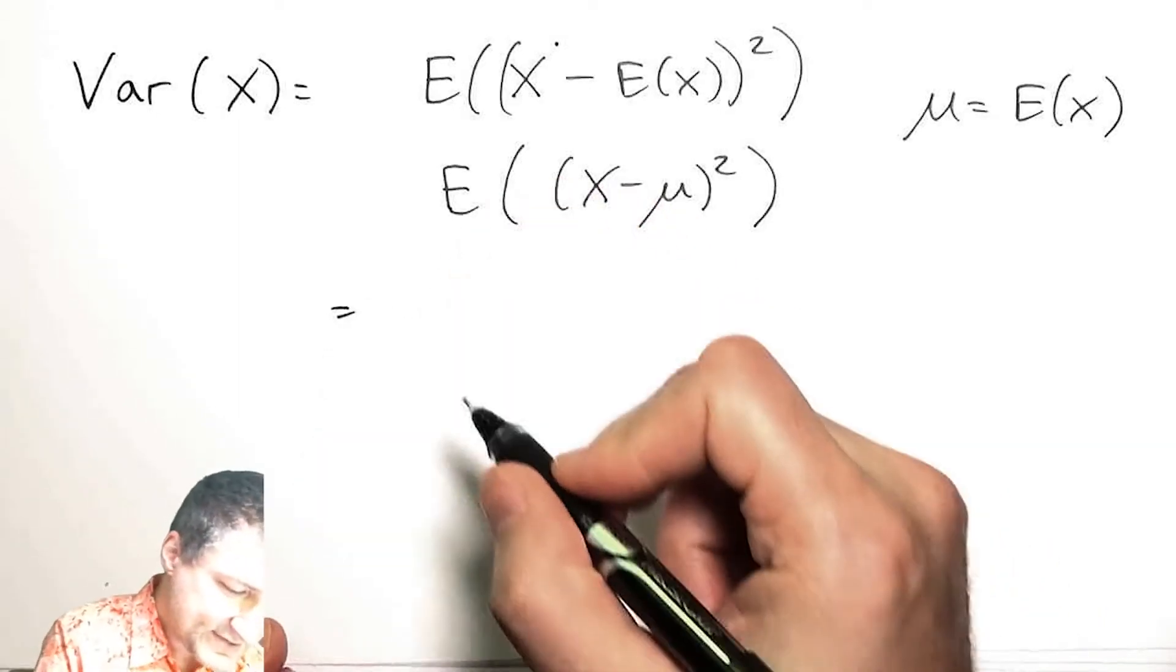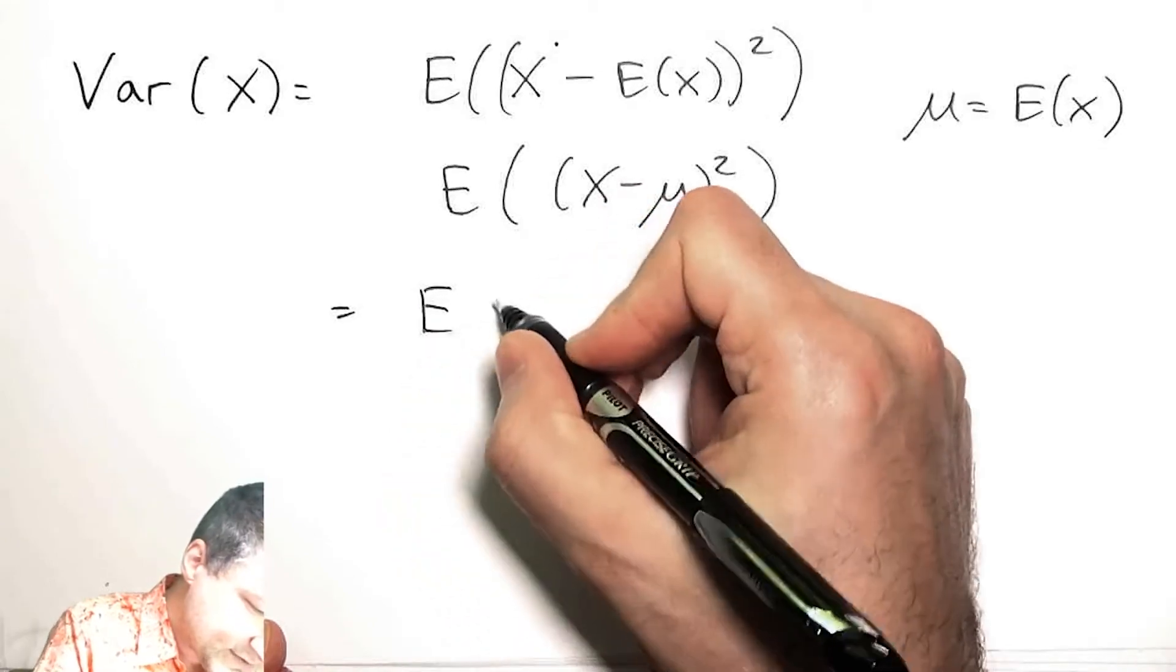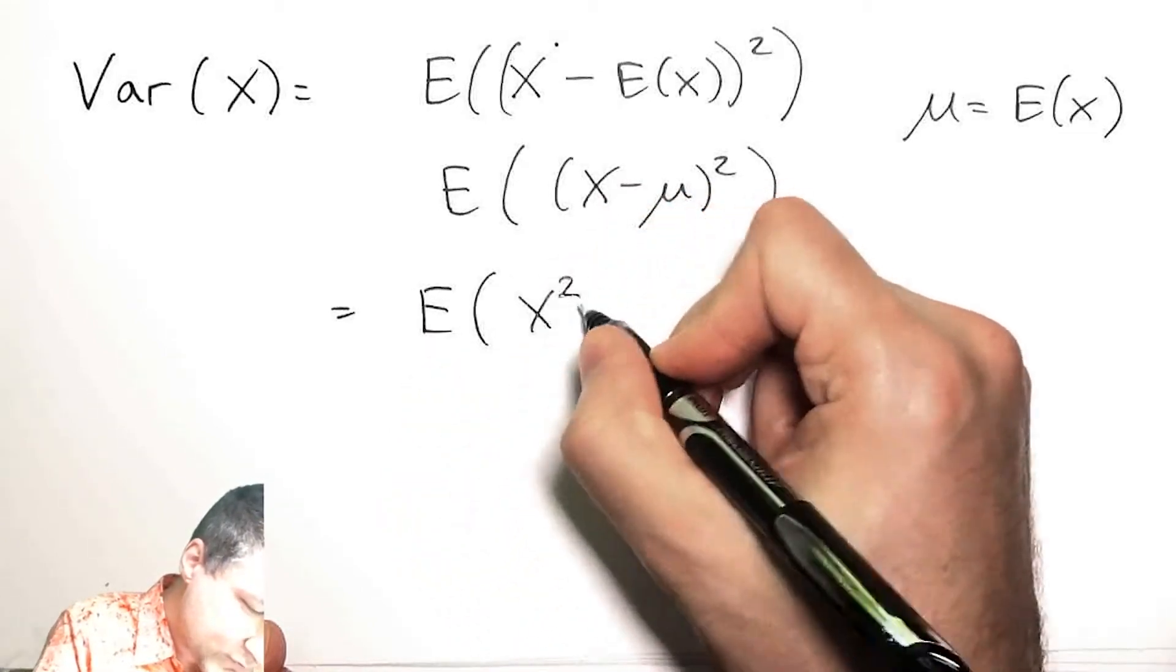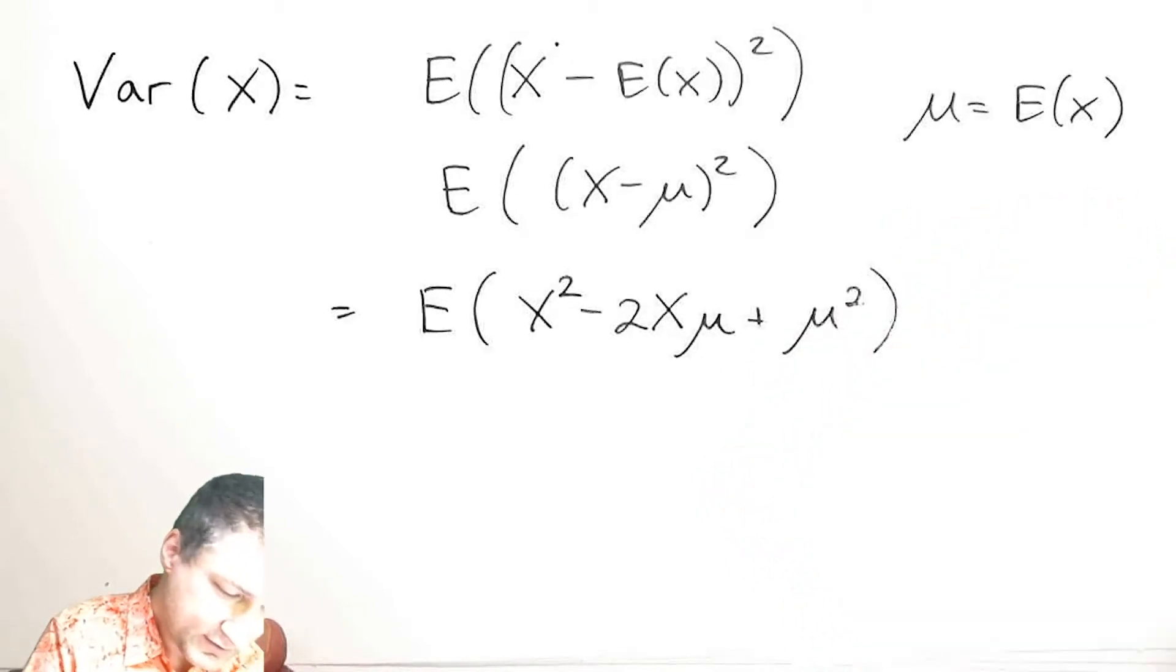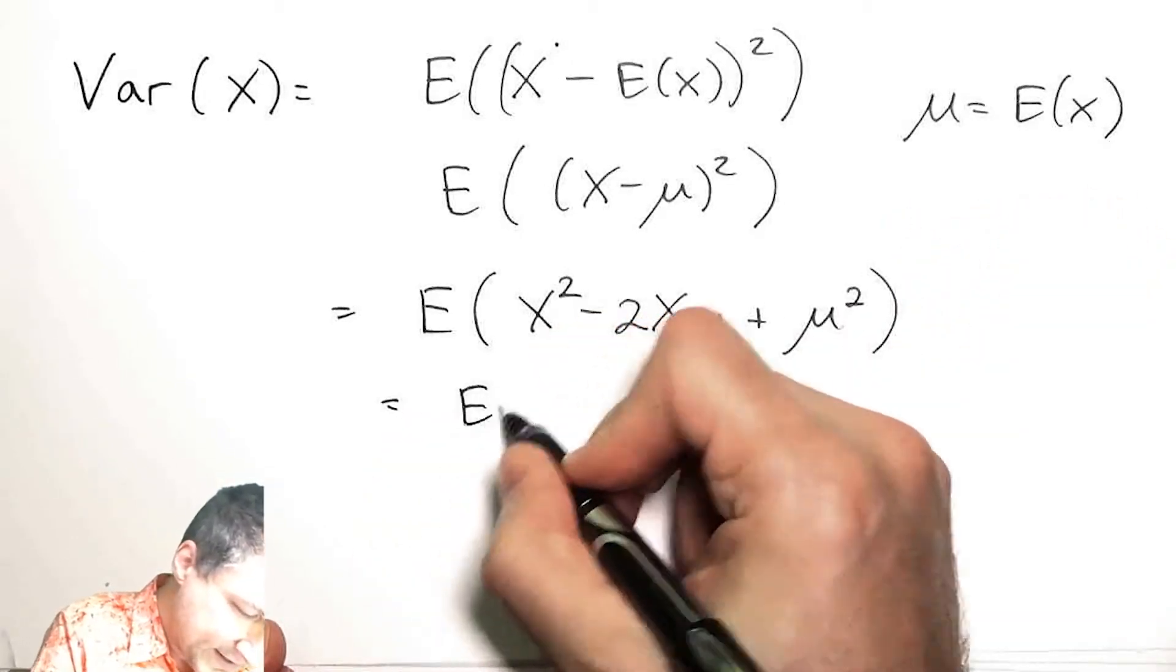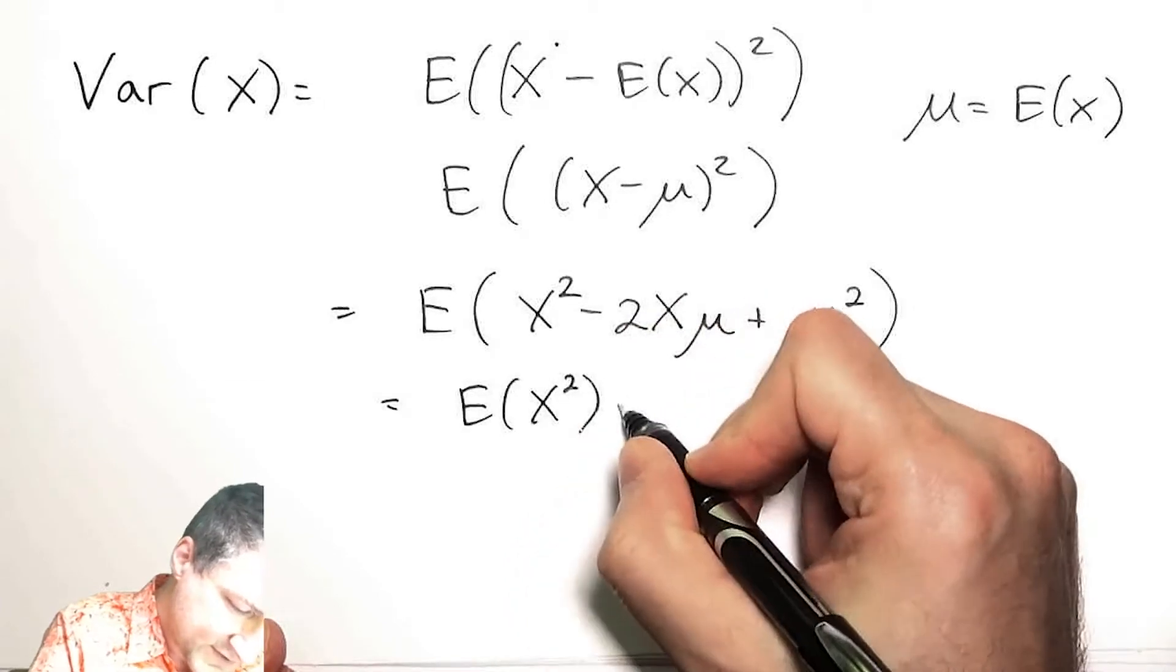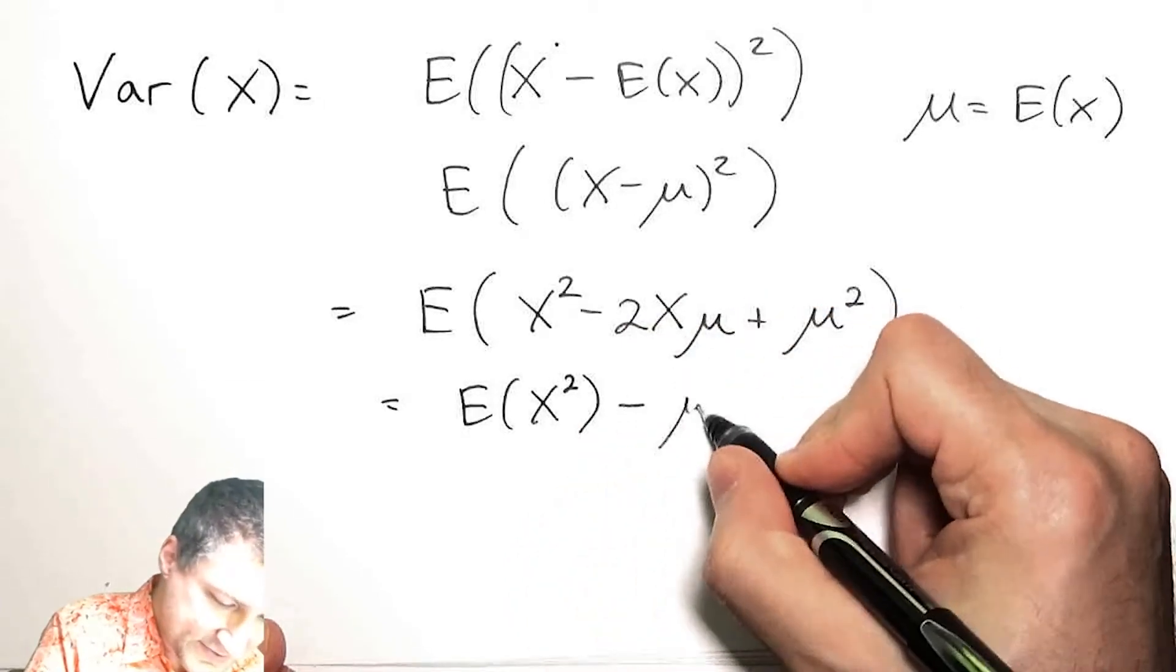I can also write this out as expected value of (X squared minus 2X*mu plus mu squared). And I know from my properties of expected value, mu is a constant, and so is 2.